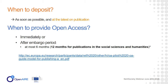When to deposit: the requirement is at the latest upon publication. Regarding when to provide open access: if possible — if you either publish in an open access journal or the publisher allows it — please provide open access at the moment of deposit. If it is not allowed, there is an embargo period. For social sciences and humanities, the embargo period is up to 12 months after the moment of publication. So the publication can be in the repository but not accessible, and after 12 months it should be made open access.